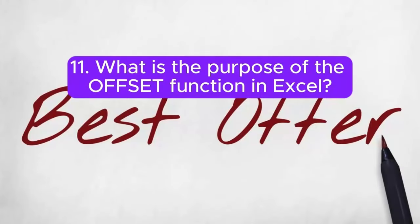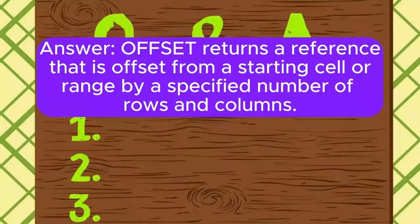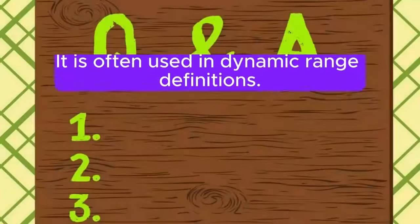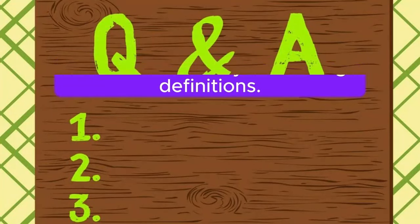Question 11: What is the purpose of the OFFSET function in Excel? OFFSET returns a reference that is offset from a starting cell or range by a specified number of rows and columns. It is often used in dynamic range definitions.